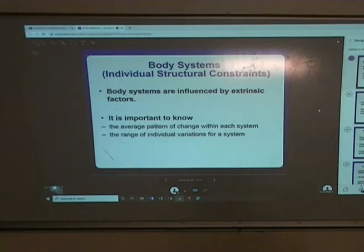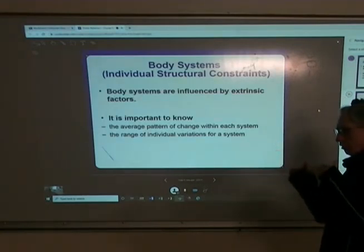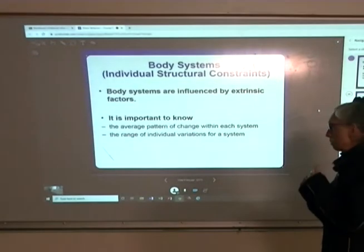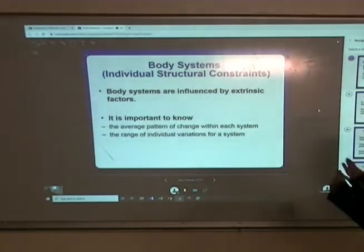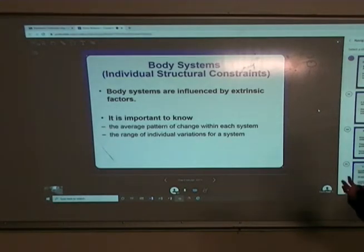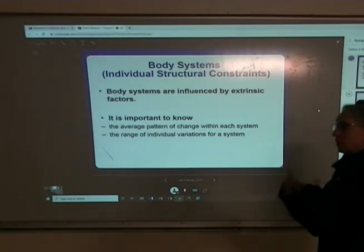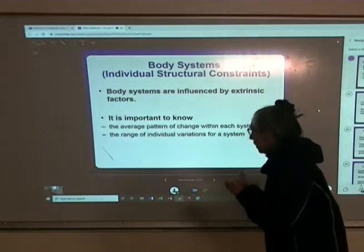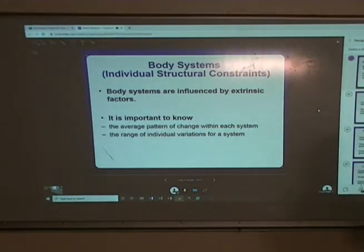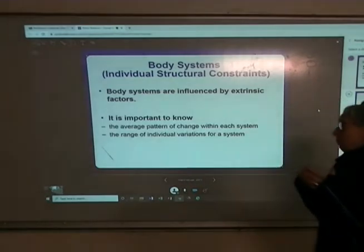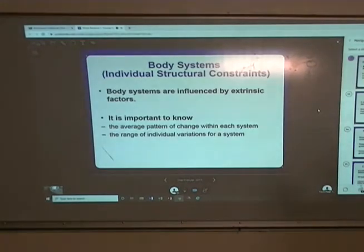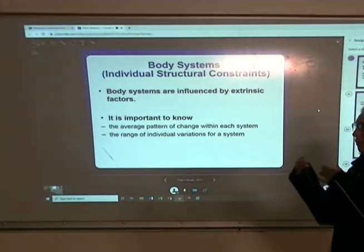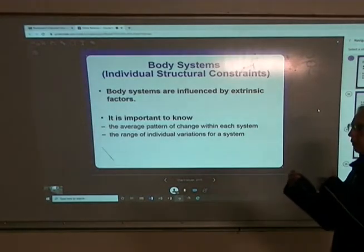Remember that body systems, when we look at our constraints triangle, would come under the section of individual structural constraints. They can be influenced by extrinsic or external factors. We talked about those teratogens with the fetus and the fact that they can have quite a dramatic effect on the baby positively or negatively. As teachers, it's important that we understand the typical pattern of growth and what the variations for an individual might be, so we can identify someone who is atypical and may need some intervention.